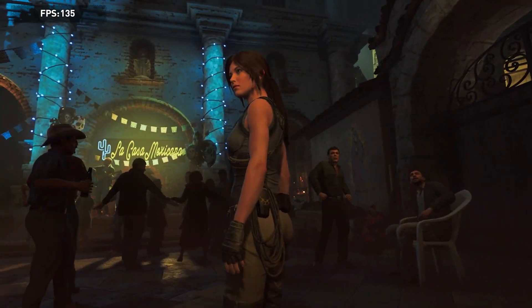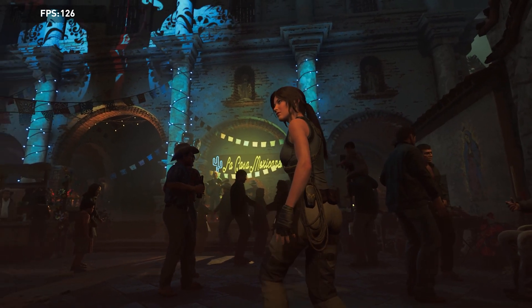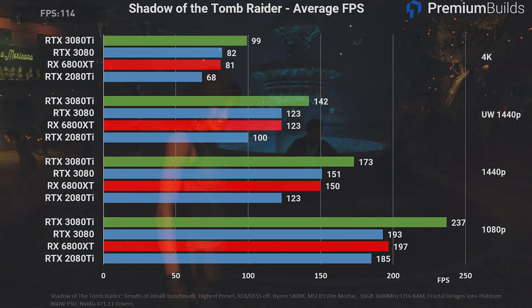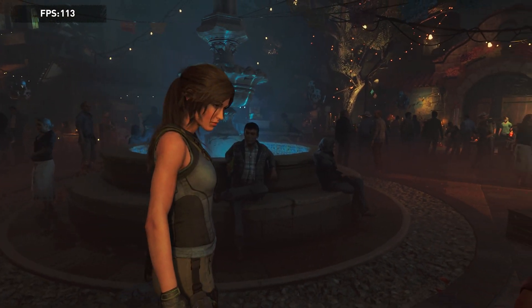Shadow of the Tomb Raider has always shown good scaling with hardware and isn't particularly CPU limited for the bulk of the benchmark run, although it is in the final village scene to provide a good overview of system performance. Here it's no different, with a good 20% advantage over the RTX 3080 — 40 fps faster at 1080p, 20 fps faster at 1440p and 1440p ultrawide, and 17 fps better at 4K. Those are fairly impressive steps up in isolation.